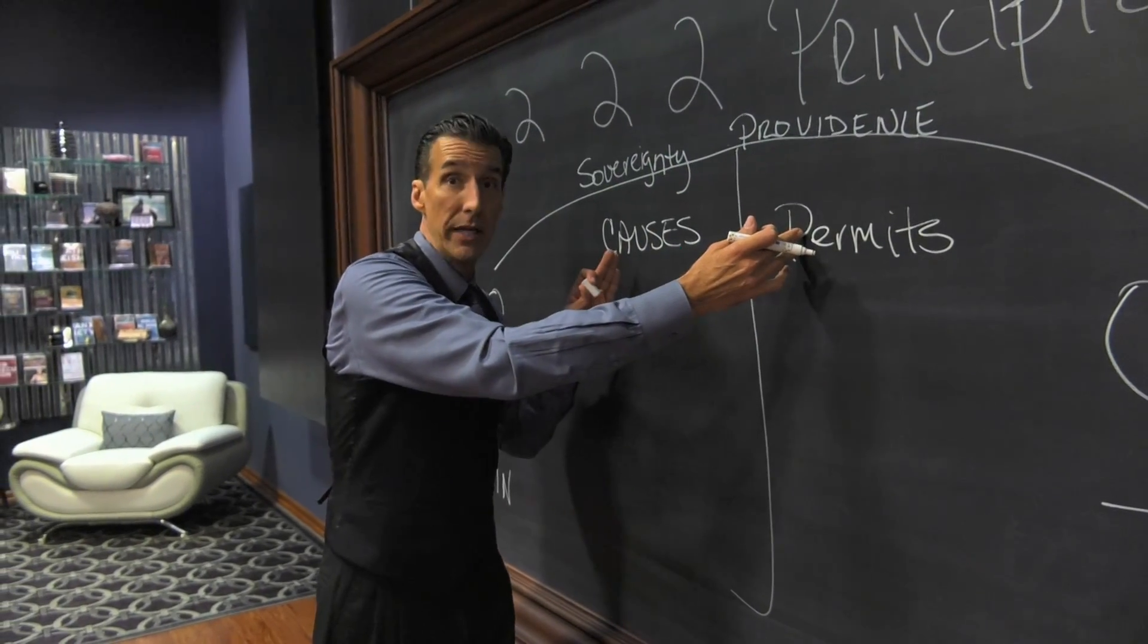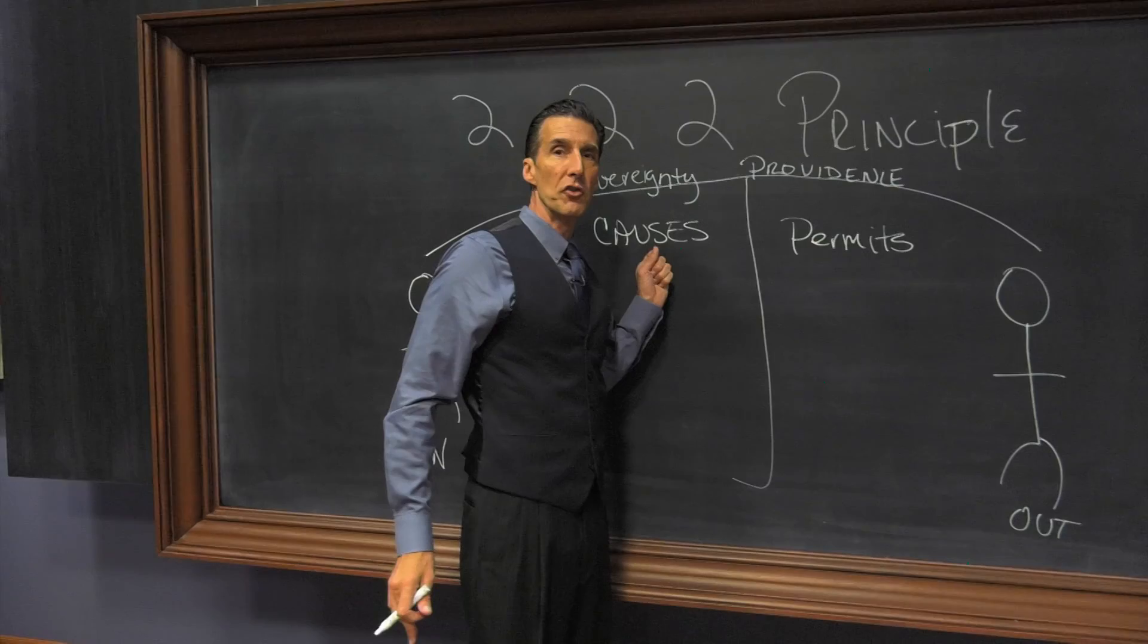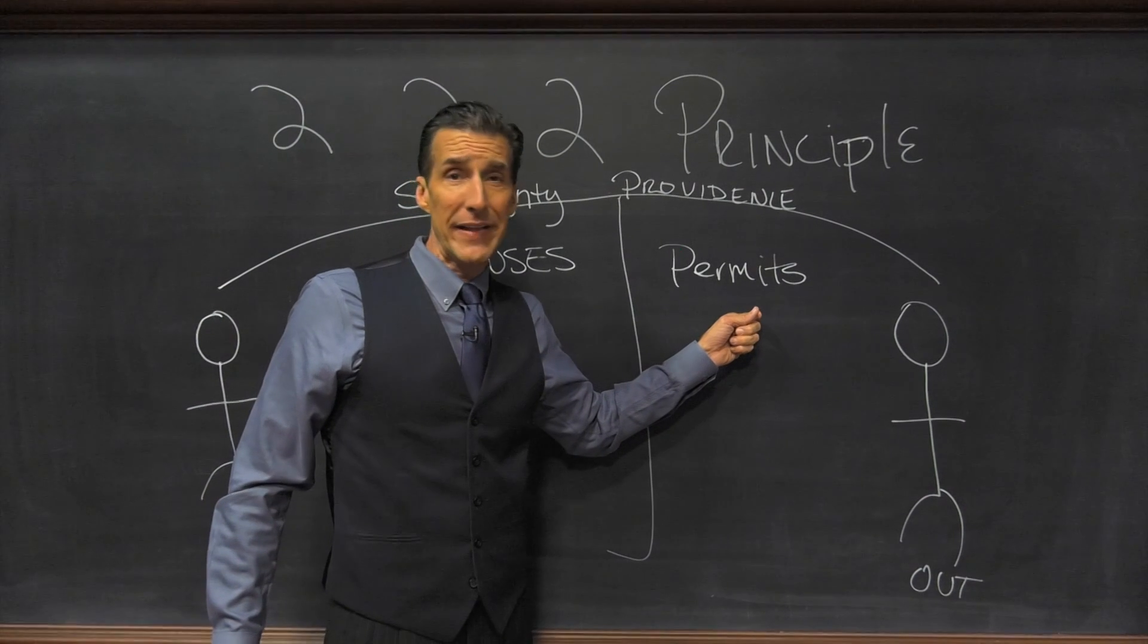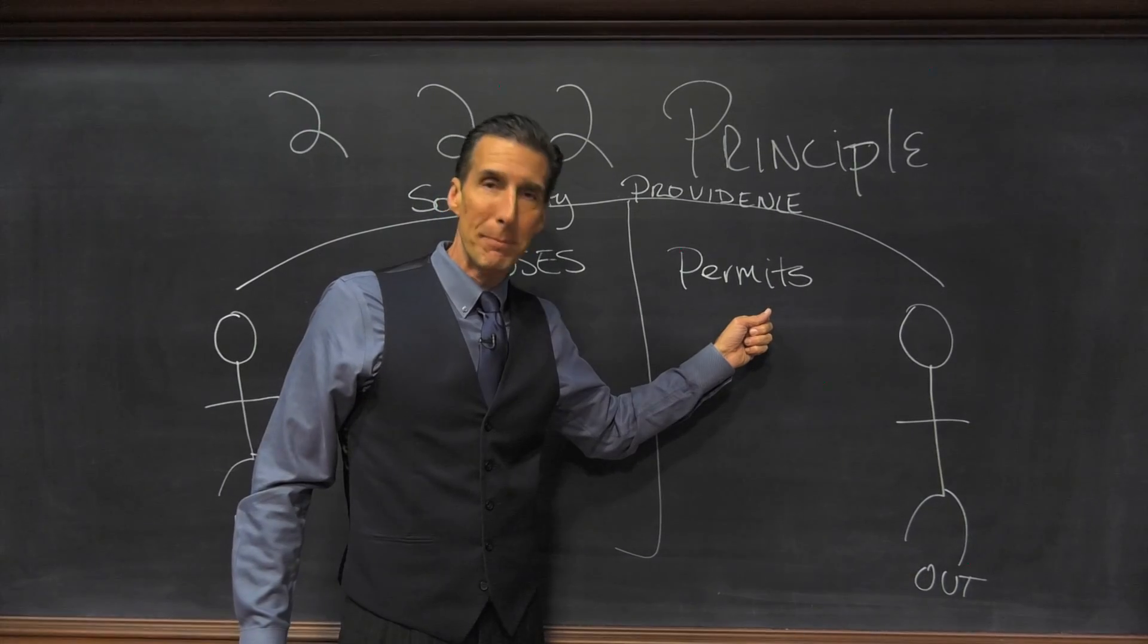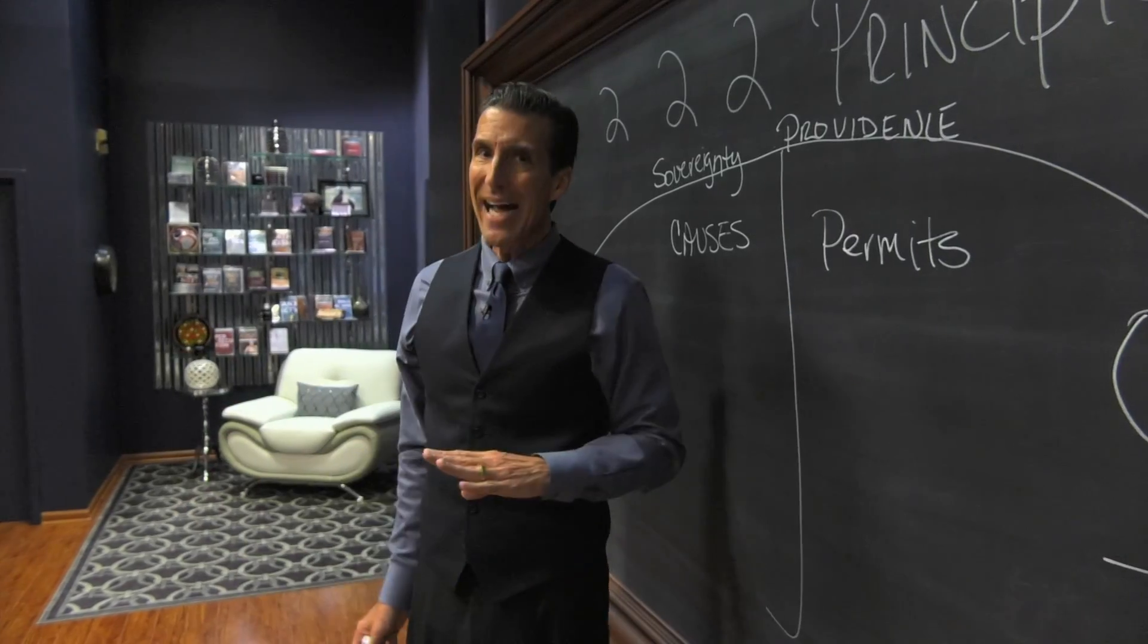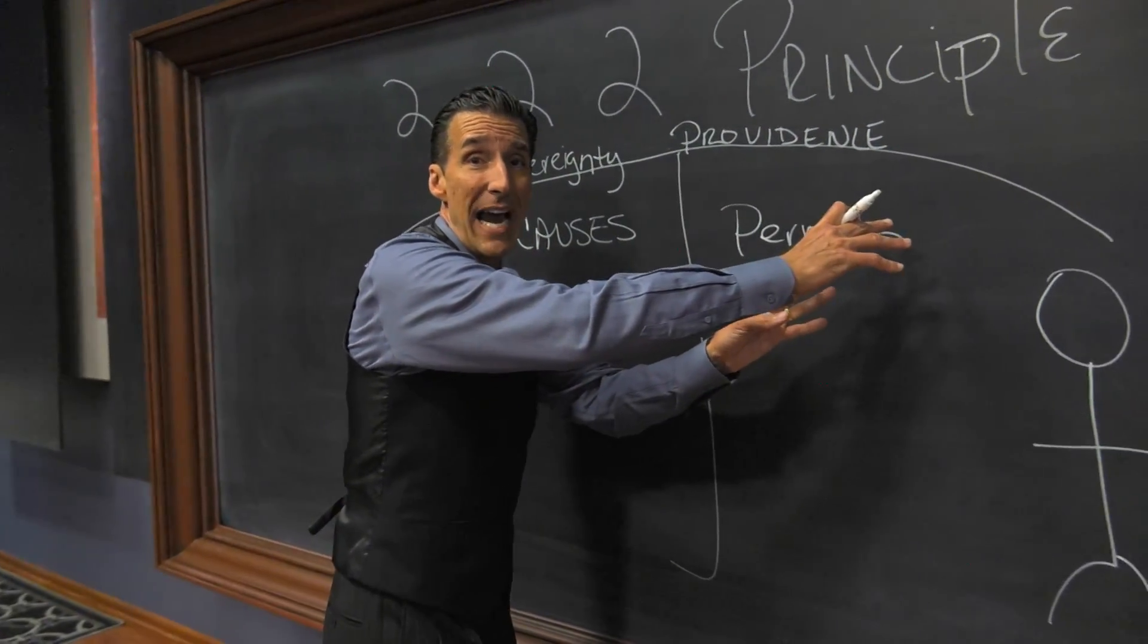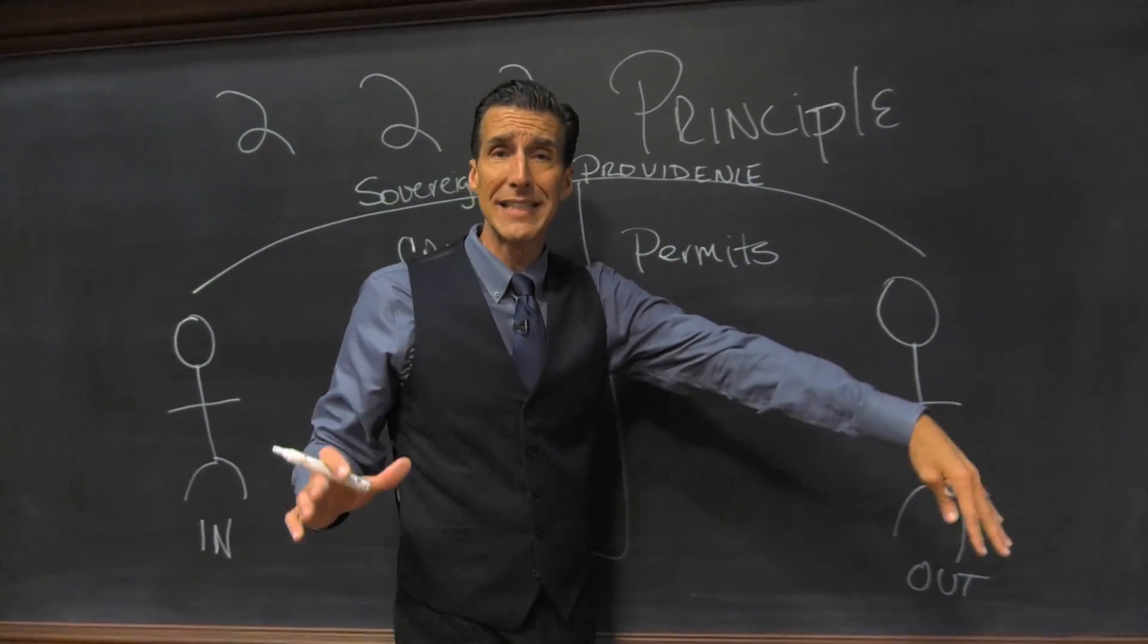What's the difference? It's a huge difference. God causes all things to work for our good. That means good and bad. But he doesn't get credit for the evil in the world. Instead, we do. Why? Because he permits us to sin and do evil things. But having said that, he causes things to happen and he permits evil things to happen. It all falls underneath this umbrella of sovereignty and providence.